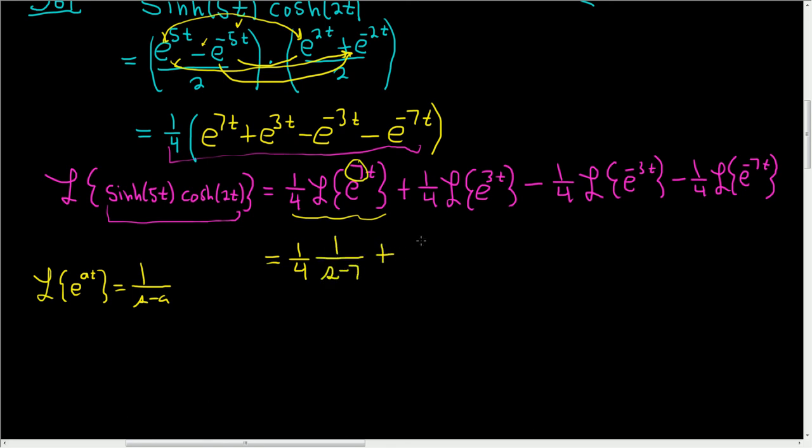Then here we have again a 1 fourth. And here a is 3, so it'll be 1 over s minus 3. Then we have a minus 1 fourth. Here a is negative 3, so it'll be 1 over s minus negative 3. But minus negative is going to give us a plus. Good stuff.